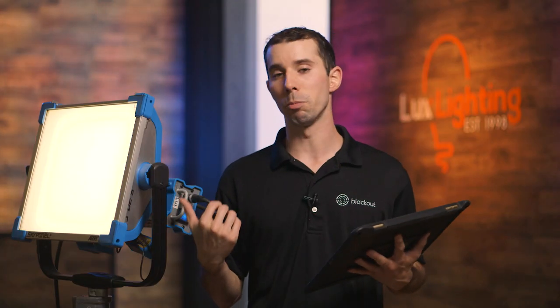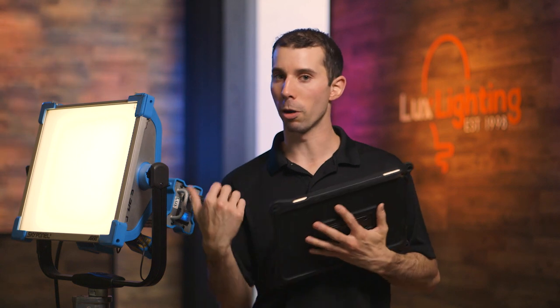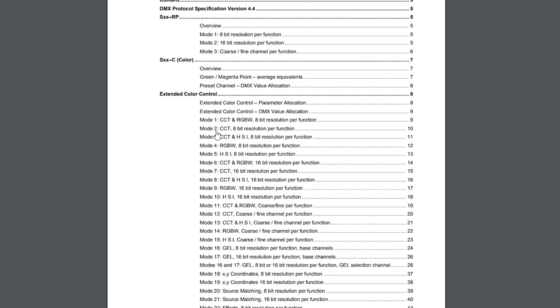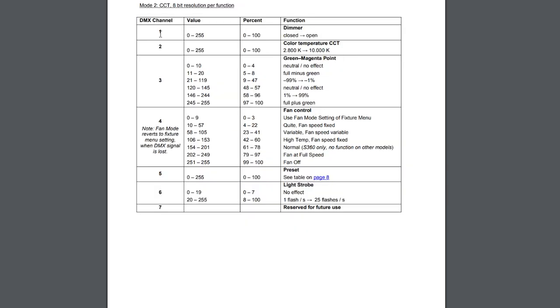I can switch this to a different mode and it will give me different parameters to adjust. I may want to do this because maybe I'm trying to condense the number of channels one fixture takes if I have a ton of different fixtures and only a limited number of universes I'm outputting. Or maybe I don't need all the parameters of the SkyPanel and I just need dimmer and CCT, so I can put it in that mode.